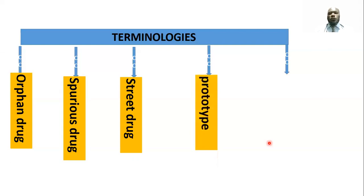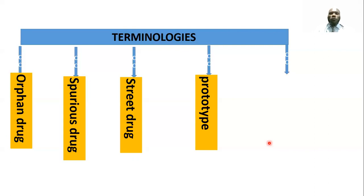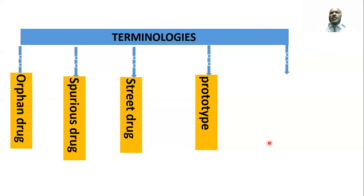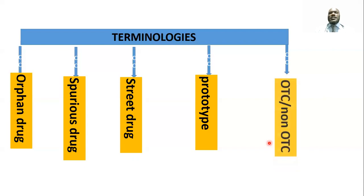We also have prototypes — the parent or most commonly used drug in a particular class. For example, propranolol is considered the prototype of beta blockers, and morphine is considered the prototype for opioid analgesics.